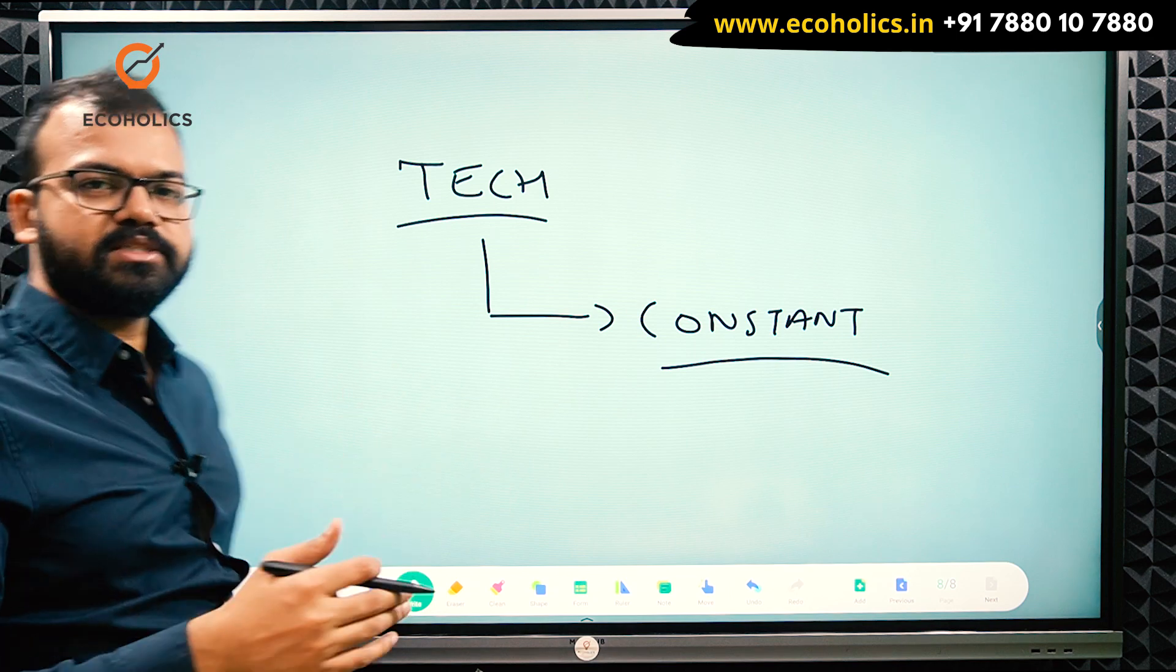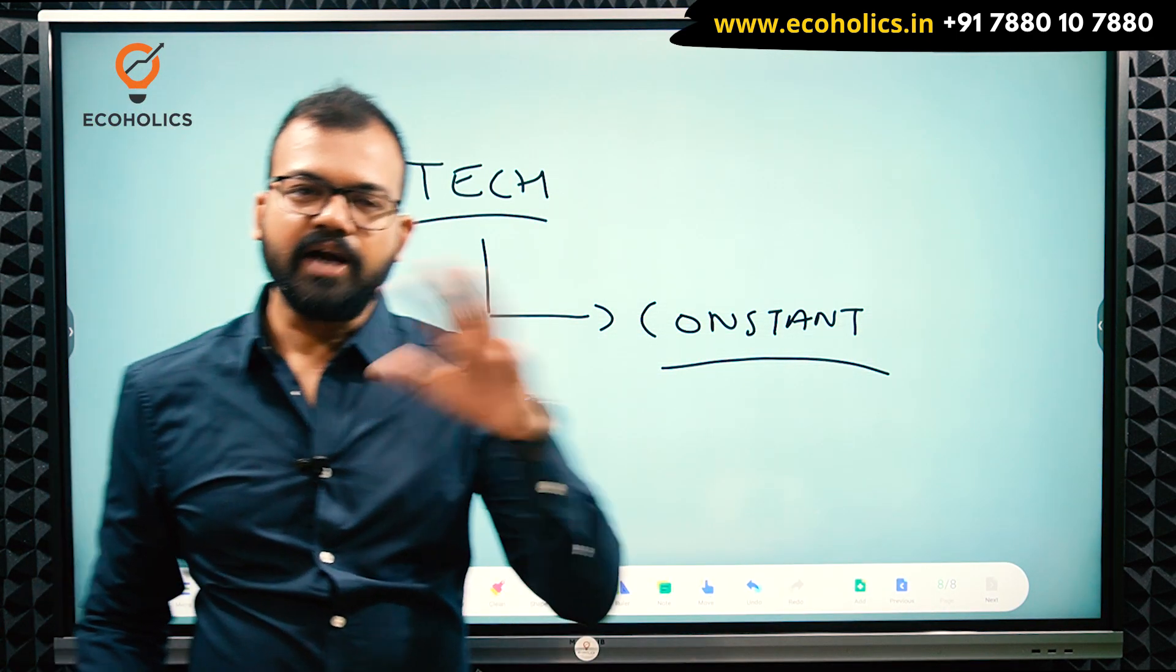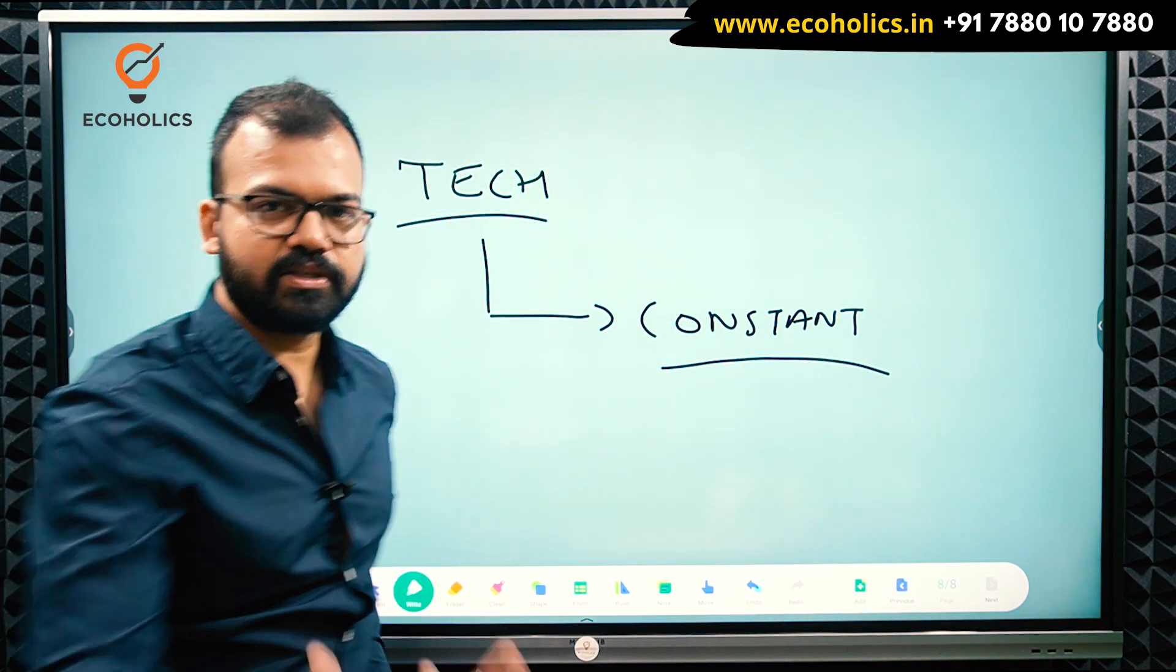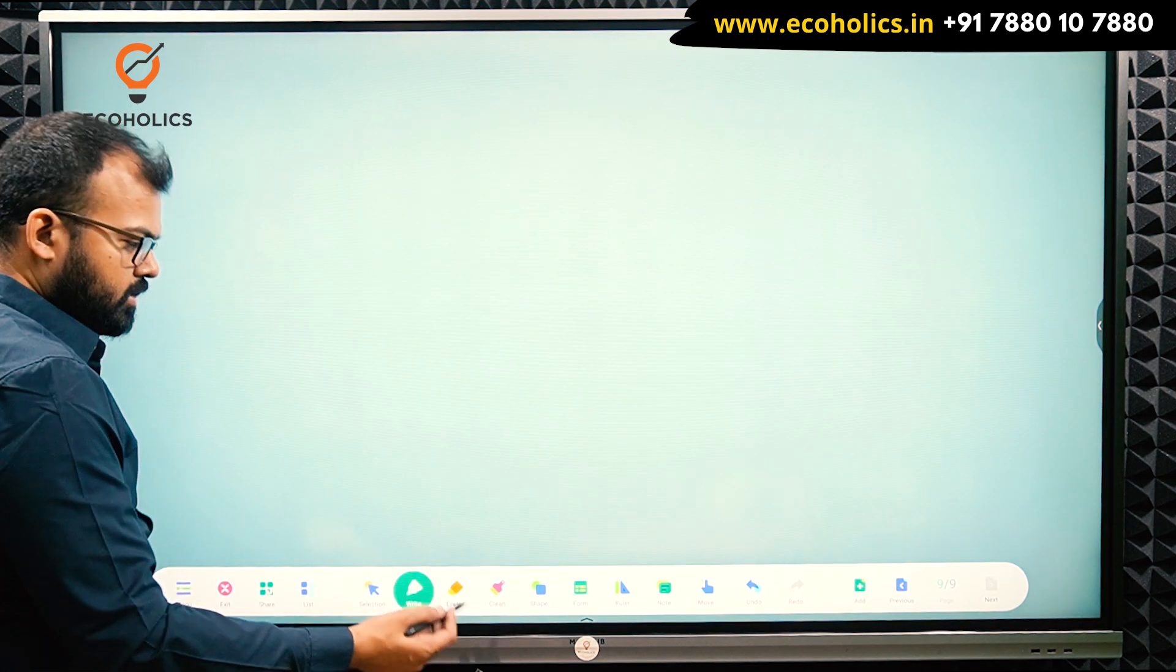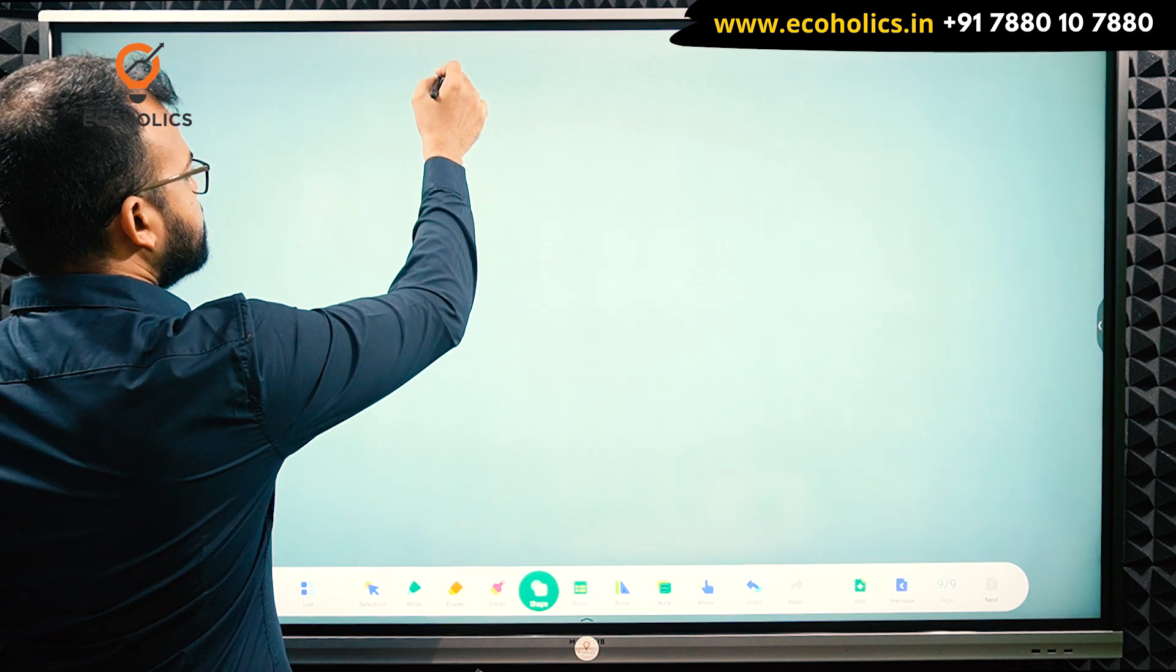Technology is considered constant. Constant technology they have assumed. It means technology will remain the same where we are analyzing it. In the part of analysis, technology will not improve. Because if technology improves, everything changes, including the efficiency of labor. Now we'll come to the diagram and try to understand this.